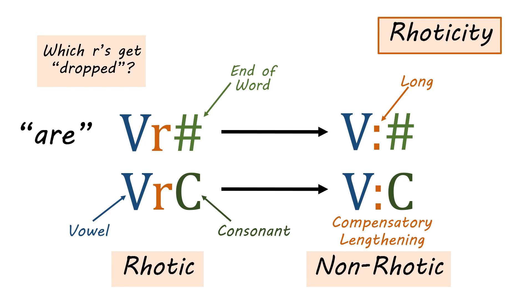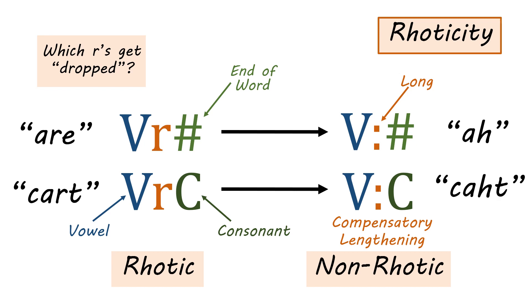So if a word ends in an R sound, like 'r,' that R gets dropped in a non-rhotic accent and becomes 'ah.' In a word like 'cart,' where R sits between a vowel and a consonant, you get 'caht' — the R is dropped and the vowel is lengthened. The silly way we represent British accents in standard orthography is often by adding an H to signify the vowel is particularly long. Anywhere else — for example, if the R is between two vowels — the R is preserved. These are the only two contexts where the R gets deleted.